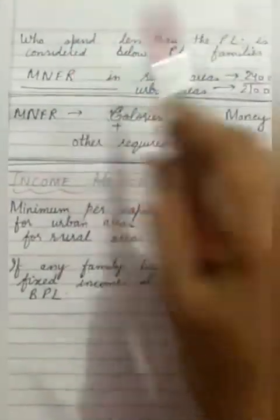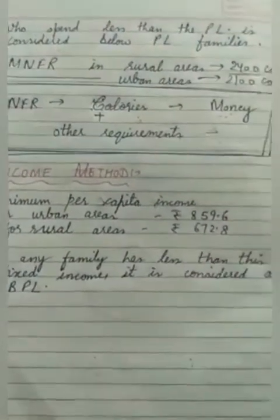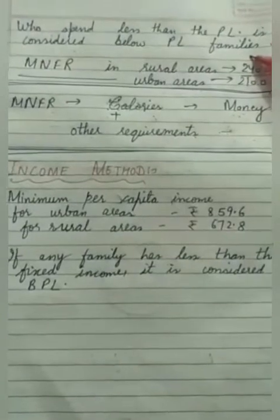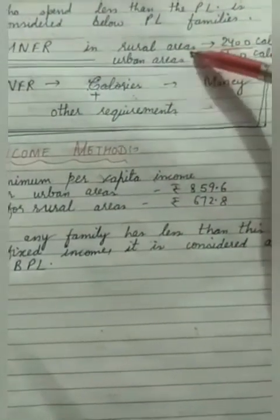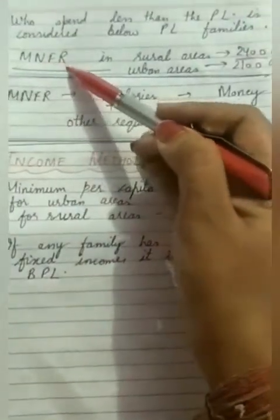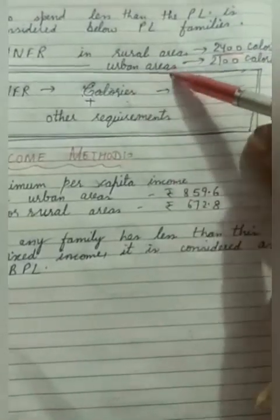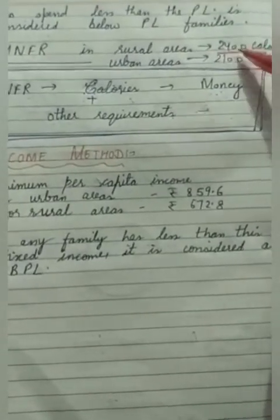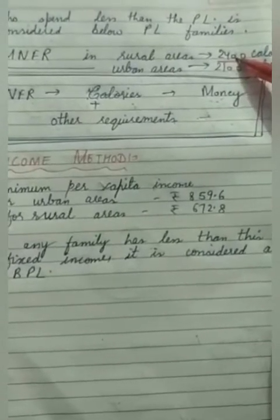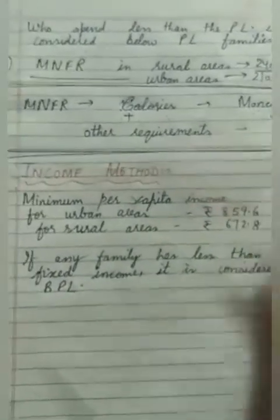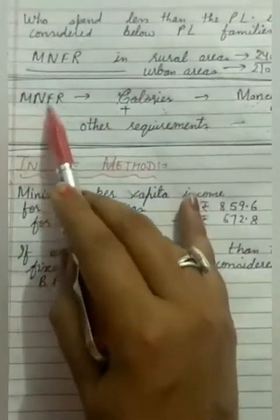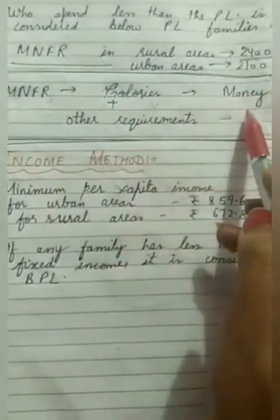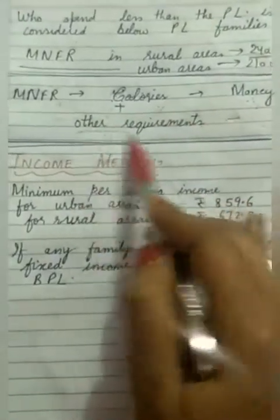The poverty line tells us that families who spend less than this amount — who don't have even this much money to spend — are below the poverty line. The minimum nutrition food requirement is 2400 calories in rural areas and 2100 calories in urban areas. Rural areas have a higher requirement because people there do more physical work. So first we estimate minimum food requirement, convert it to calories, then convert calories to money, and add other requirements.